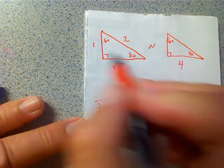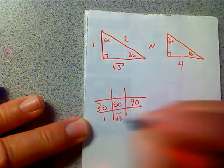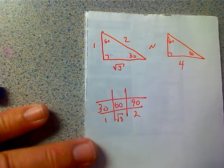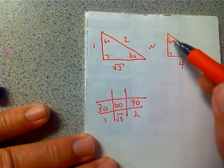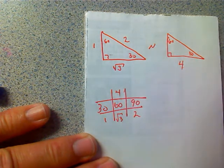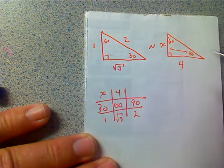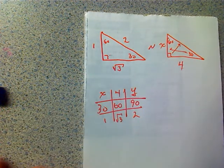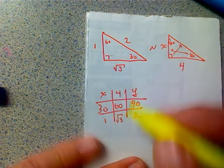Now, on my reference triangle, across from the 30 is a 1. Across from the 60 is a square root of 3. And across from the 90 is a 2. When I look at this triangle, across from the 60 is a 4. Across from the 30, I don't know it, let's call it x. And across from the 90, I don't know that one, let's call it y. So again, just like before, I'm going to pick two of these ratios. So I'm going to use these first two here.